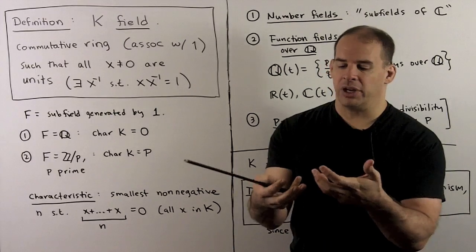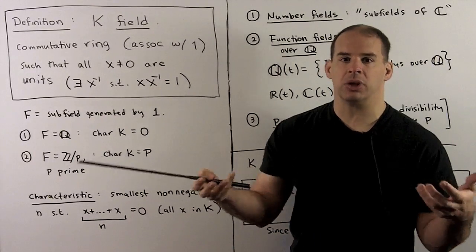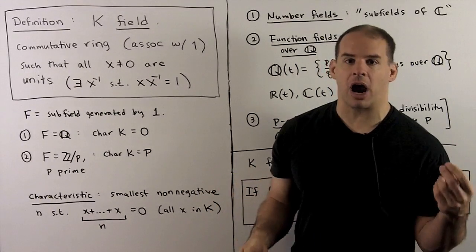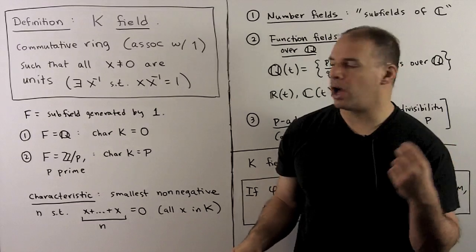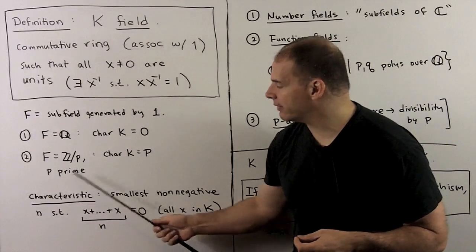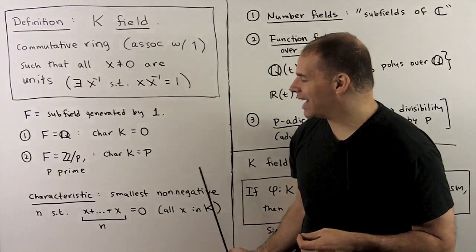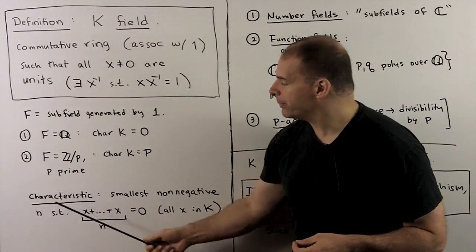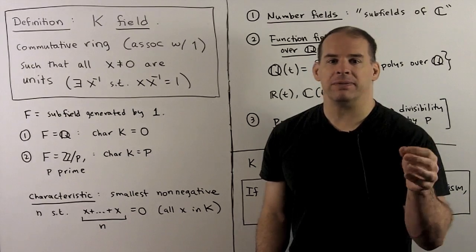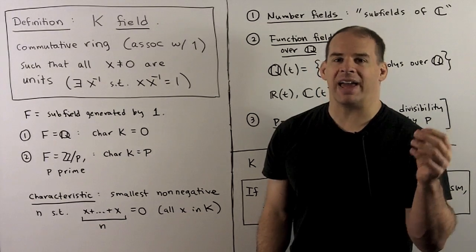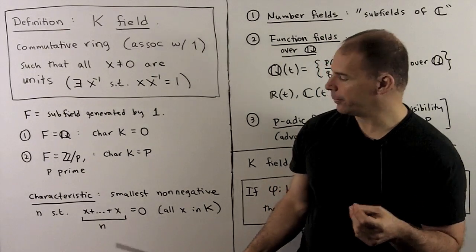With that definition, we split fields into two classes by characteristic. The characteristic of a field is the smallest non-negative integer n such that if we add any element in the field to itself n times, we get zero.